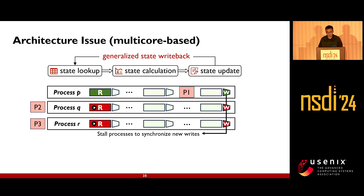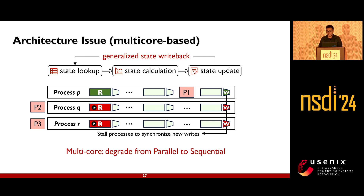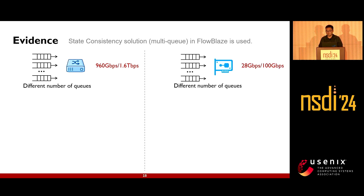For multi-core-based architecture, when one process is busy with state processing, other processes that need access to the same state must wait until the state has been updated and synchronized, downgrading parallel execution to sequential execution. Simulations of pipeline support for stateful network functions in both switch and NIC scenarios showed that NIC traffic reached 28% throughput while switch traffic reached 60% throughput, using a flow-based multi-core method to guarantee state consistency.